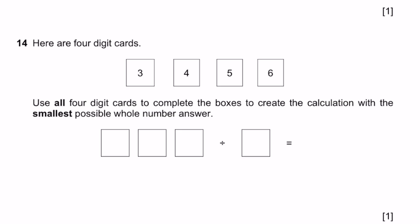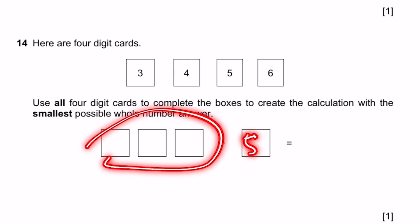Question 14. Here are four digit cards. Use all cards to complete the boxes to create the calculation with the smallest possible whole number answer. So, to make the smallest possible answer, we need this number to be as small as possible. Therefore, for this value, we need to have a small value, but then not the smallest. I'll tell you why. And this value, we need to have as small value as we can possibly get. Also, this has to be a whole number answer. So, that means this number cannot be 5, since having a 5 there, we don't have this number possible to be divisible by 5. Therefore, we need to make this number a 6, 4, or 3.